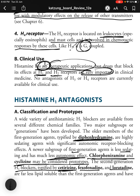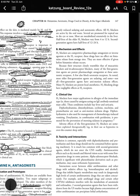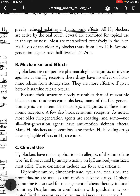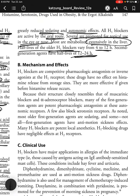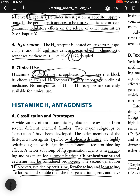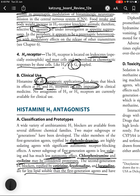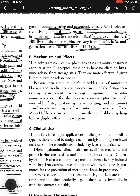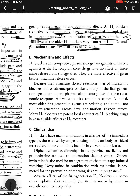A newer subgroup of first-generation H1 agents — including chlorpheniramine and cyclizine as prototypes — is less sedating and has much less autonomic effect. Second-generation H1 blockers, typified by cetirizine, fexofenadine, and loratadine, are far less lipid-soluble than first-generation agents and have greatly reduced sedating and autonomic effects. All H1 blockers are active by the oral route; most are metabolized extensively in the liver. Half-lives of older H1 blockers vary from 4–12 hours; second-generation agents have half-lives of 12–24 hours.